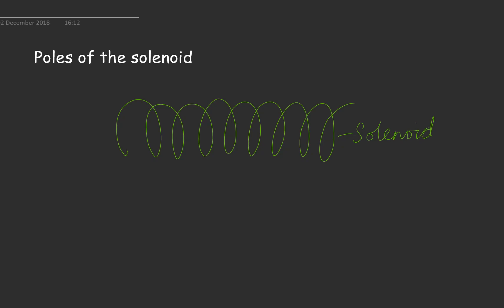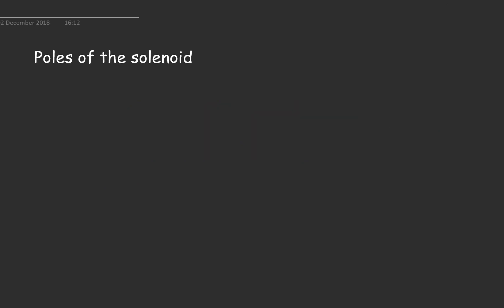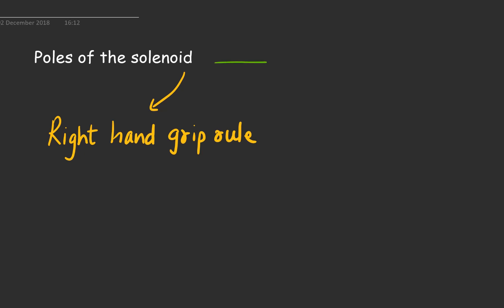Now if you have to find the poles of a solenoid — meaning if you want to find out whether this end or this end is a north pole — there are two methods. The first method is the right hand grip rule, and the second method is the method of mnemonics.